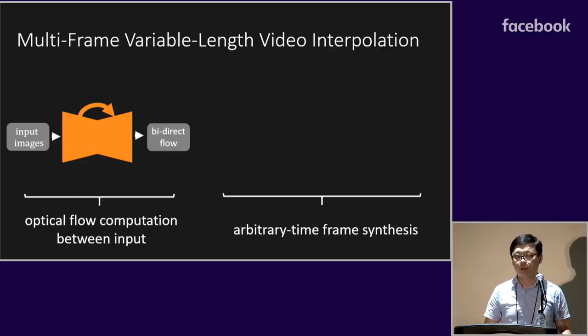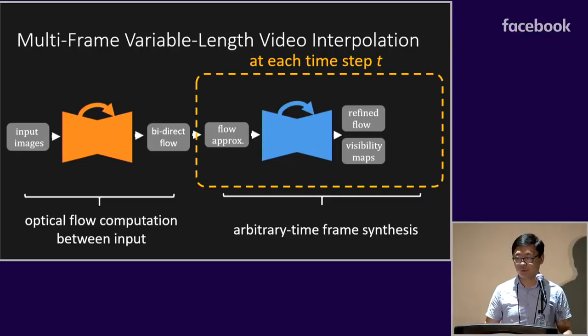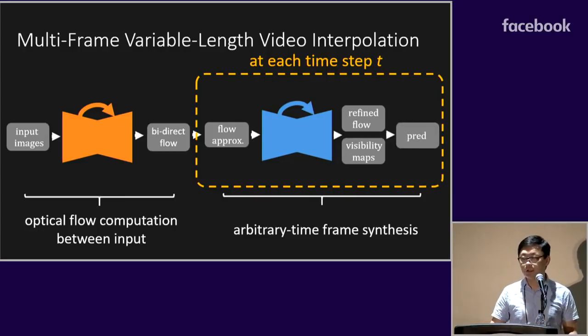In the second part, at each time step t, we first get an approximation of bidirectional intermediate optical flow. We then have another separate neural network to get refined intermediate optical flow, as well as pixel-wise visibility maps, which are finally used to synthesize an intermediate frame.